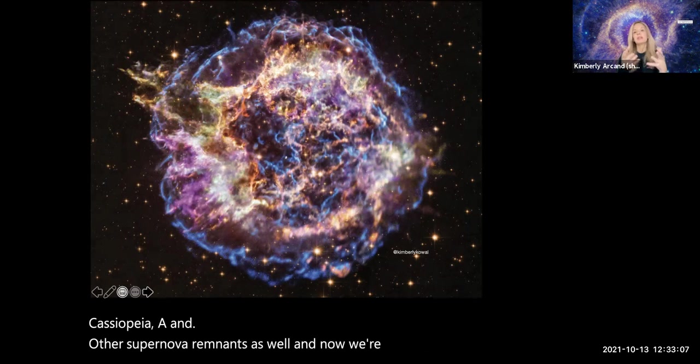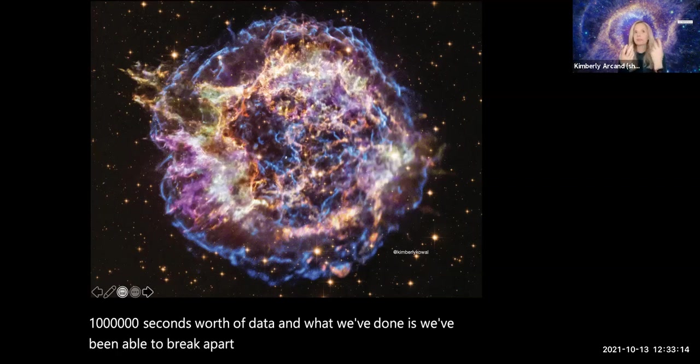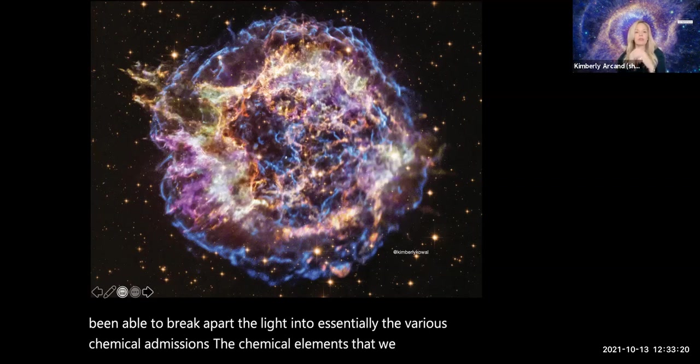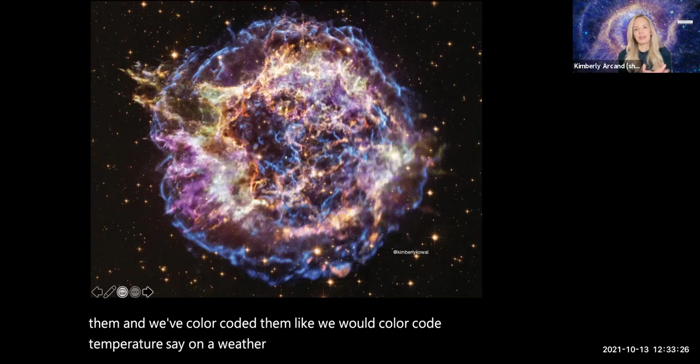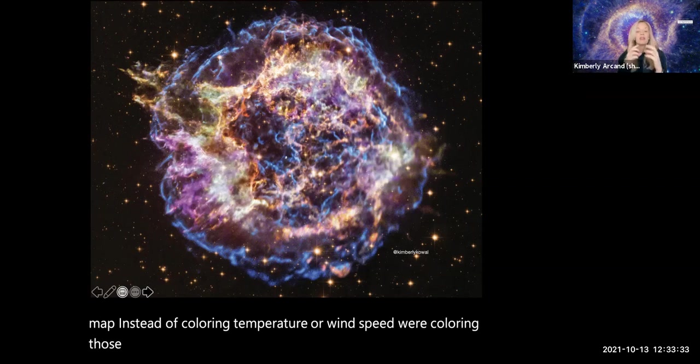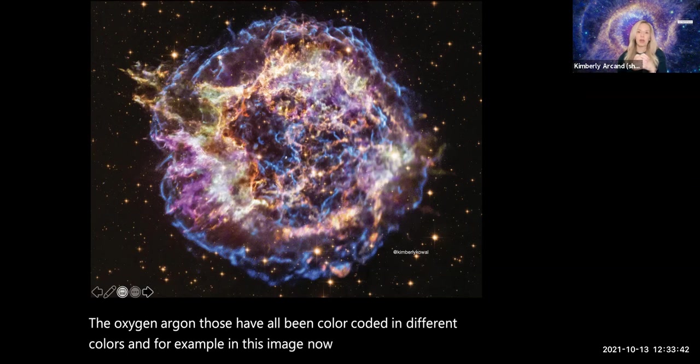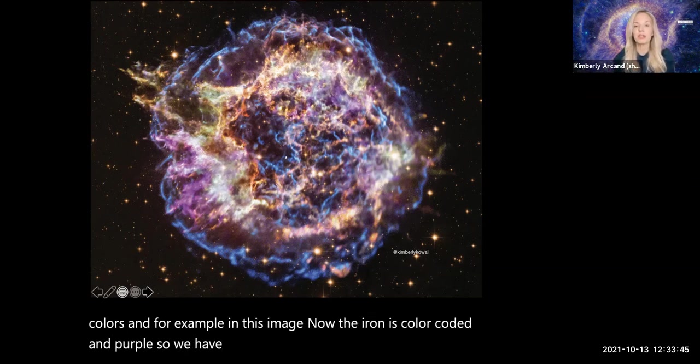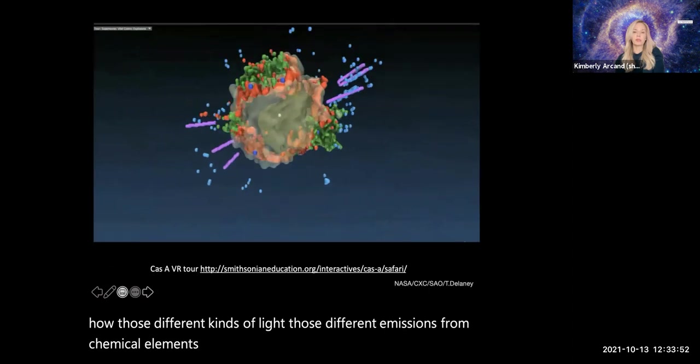We're looking at over a million seconds worth of data. And what we've done is we've been able to break apart the light into essentially the various chemical emissions, the chemical elements that we can detect in them. And we've color coded them. So the silicon, the sulfur, the oxygen, the argon, those have all been color coded in different colors. For example, in this image now, the iron is color coded in purple. So we have a beautiful way to be able to understand how those different emissions from chemical elements are shown in this stunning nebula.